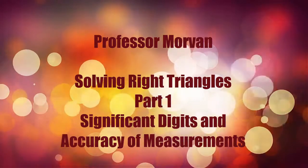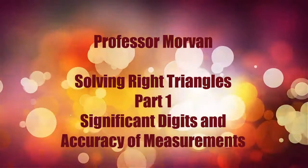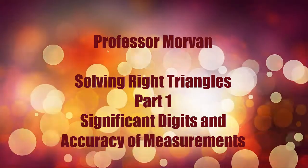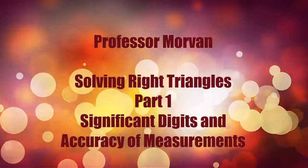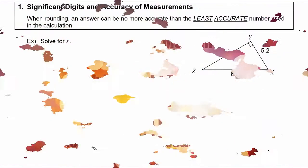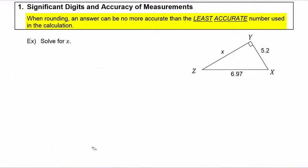In part one of our lesson on solving right triangles, you're going to learn about significant digits and accuracy of measurements. When you're rounding in a calculation, your answer can be no more accurate than the least accurate number used in the calculation.